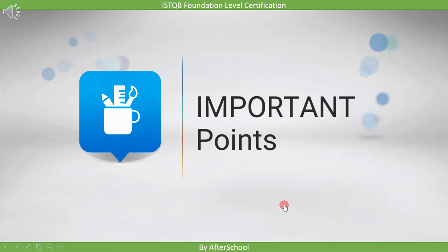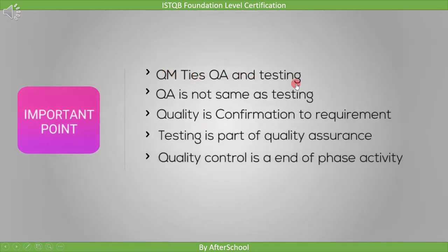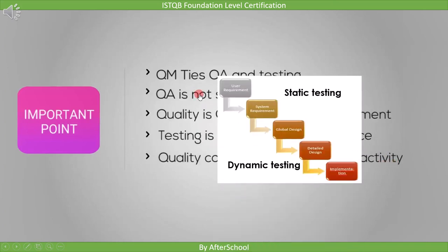Before we end this video, let's look at the important points. First, quality management ties quality assurance and testing together. Second, quality assurance is not the same as testing. Third, quality is conformance to requirement — in software testing, quality means we are meeting the requirement. Fourth, testing is part of quality assurance. And last, quality control is an end-of-phase activity. In each phase of software development, once the activity of that phase is done, quality control comes into picture — that's why quality control is called an end-of-phase activity.